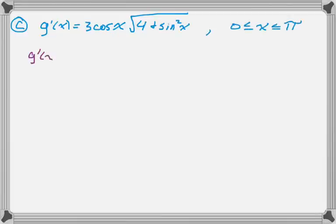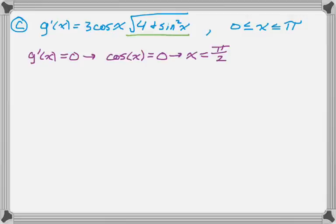So if the derivative equals 0, that means that cosine must be equal to 0. Because radical 4 plus sine of x never equals 0. And it's always positive. So cosine equals 0. But that only happens at pi over 2 on this interval. So that's our only critical point.